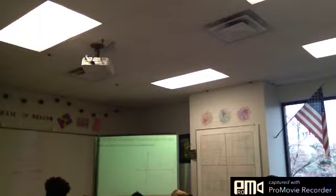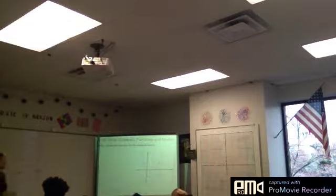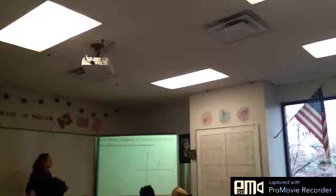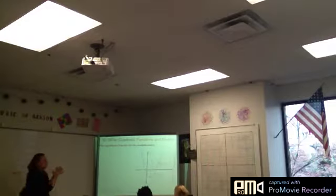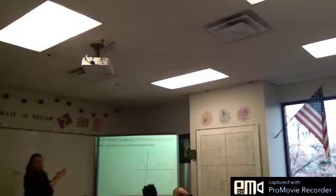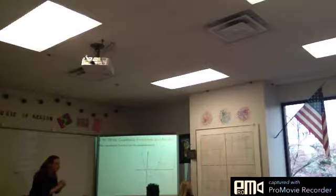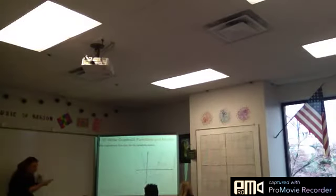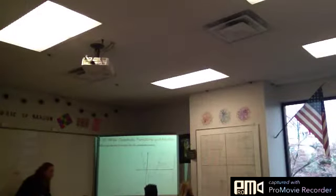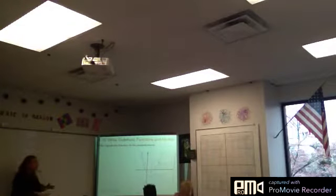Section 4.10 is writing quadratic functions and model setting. Here is a graph, and it says write a quadratic function for this parabola. What two points does it give me on this? The vertex and another point. So what form do you think I'm going to write this in? Vertex form — beautiful. If it gives you the vertex, I'm going to put it in vertex form.